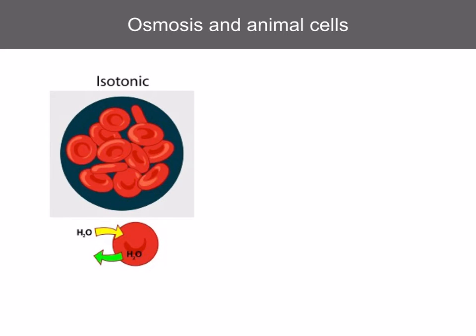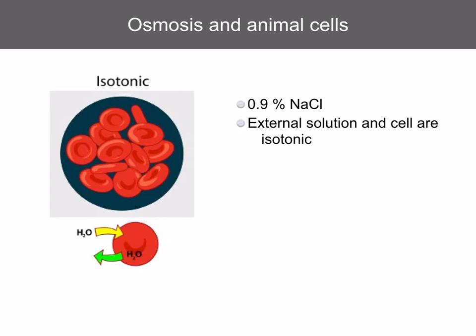To prevent cells from bursting, they're placed in a solution that has the same water potential as the cells. An example is 0.9% sodium chloride solution. The external solution and the cell are isotonic, and there's no net osmosis, so there'll be no change in the red blood cell.